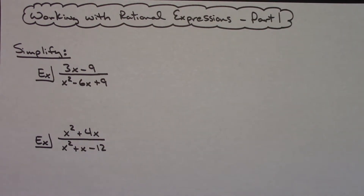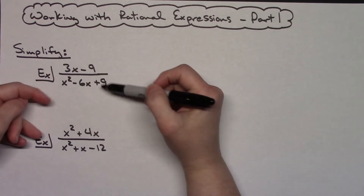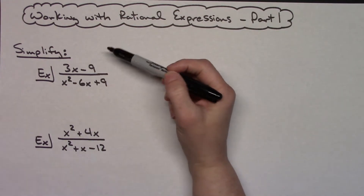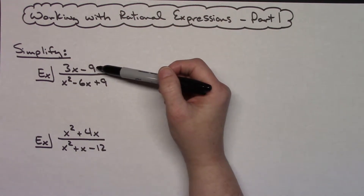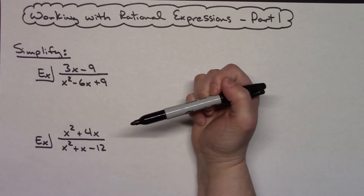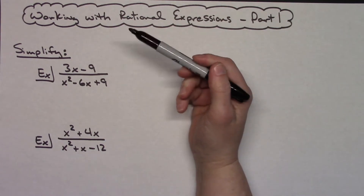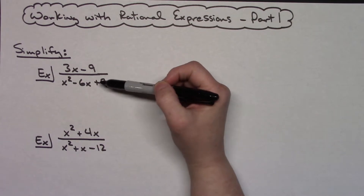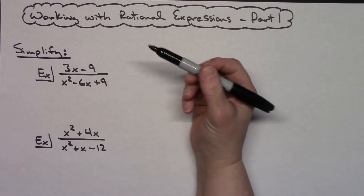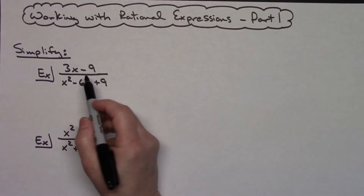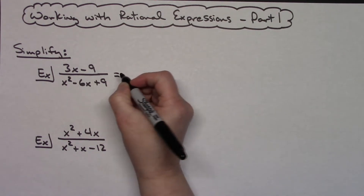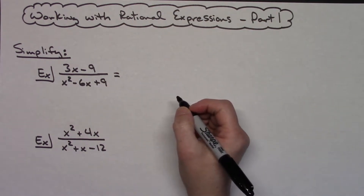Today I'm going to be working with some rational expressions, and in this first video for Part 1, I'm only going to be simplifying rational expressions. A rational expression means you're going to have a fraction with an algebraic expression in the numerator and an algebraic expression in the denominator. You're going to attempt to factor both, then see if anything cancels out. A good review of factoring is necessary to work these types of problems.